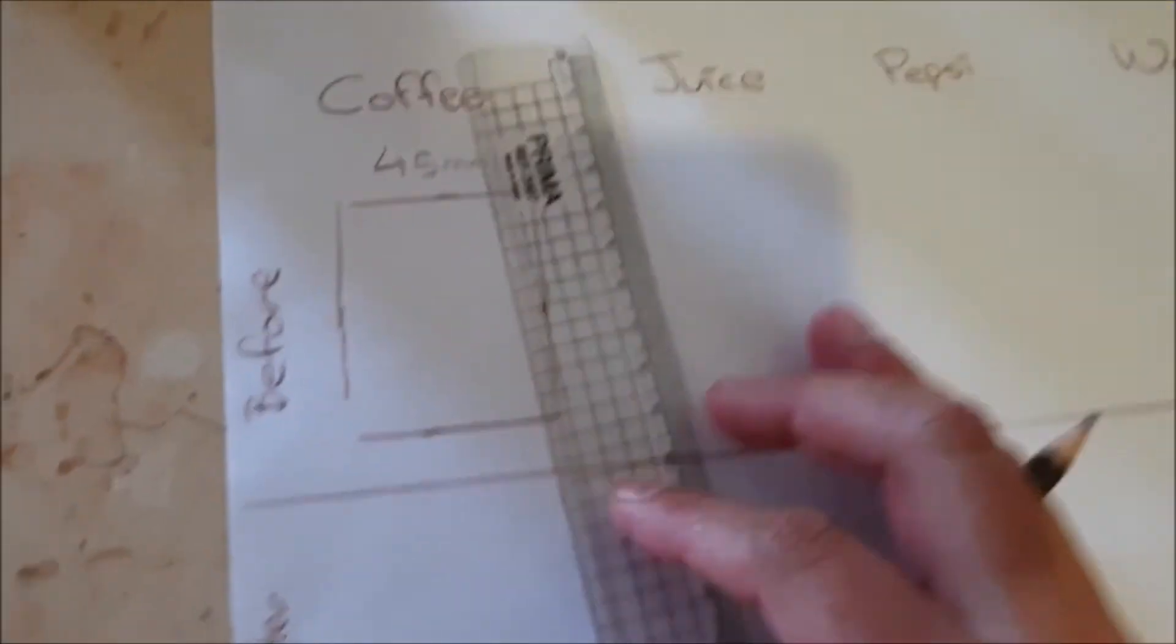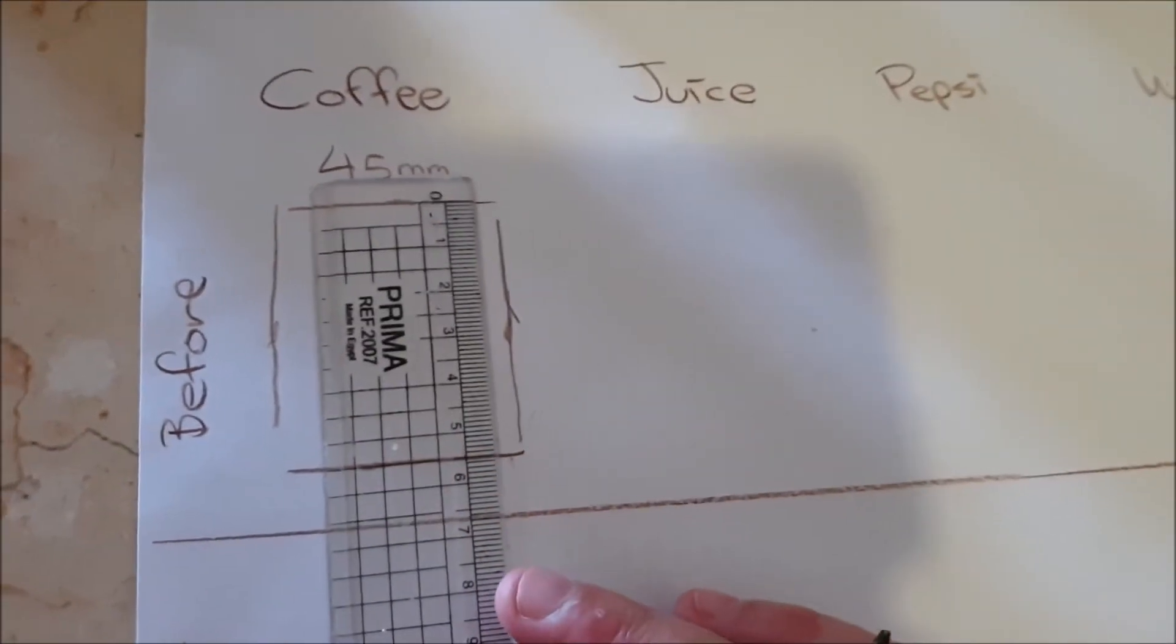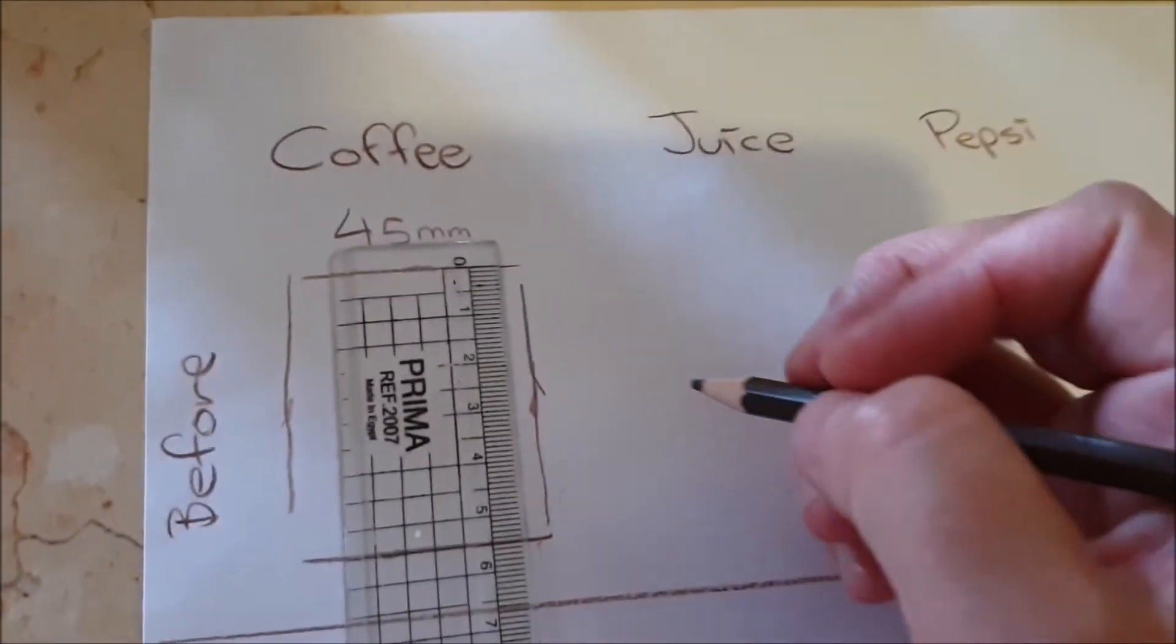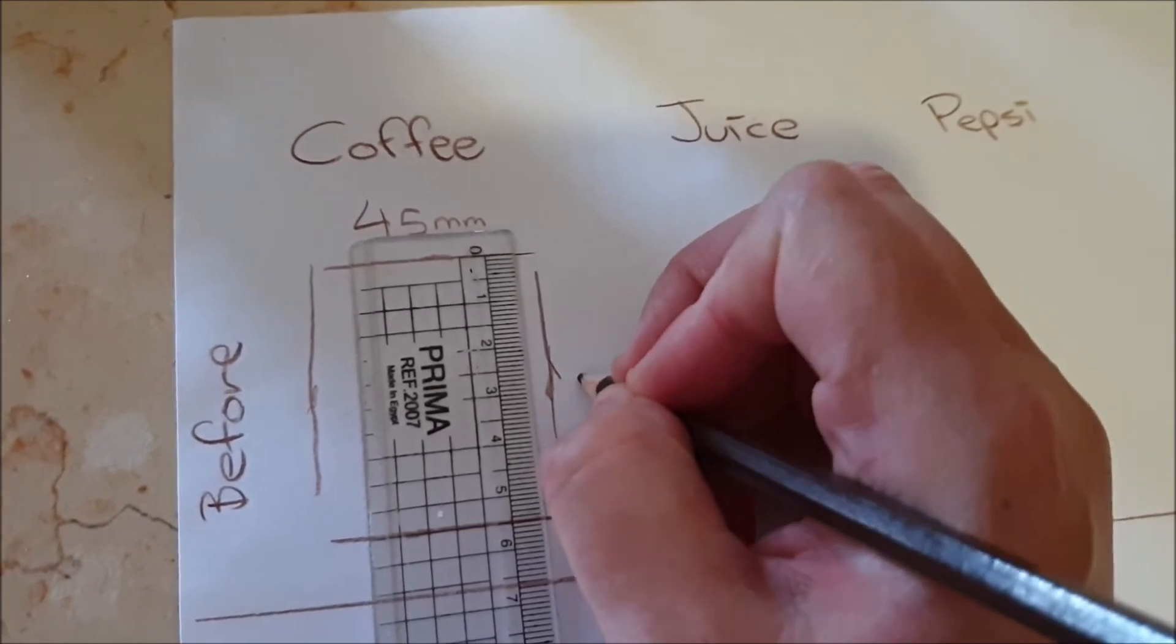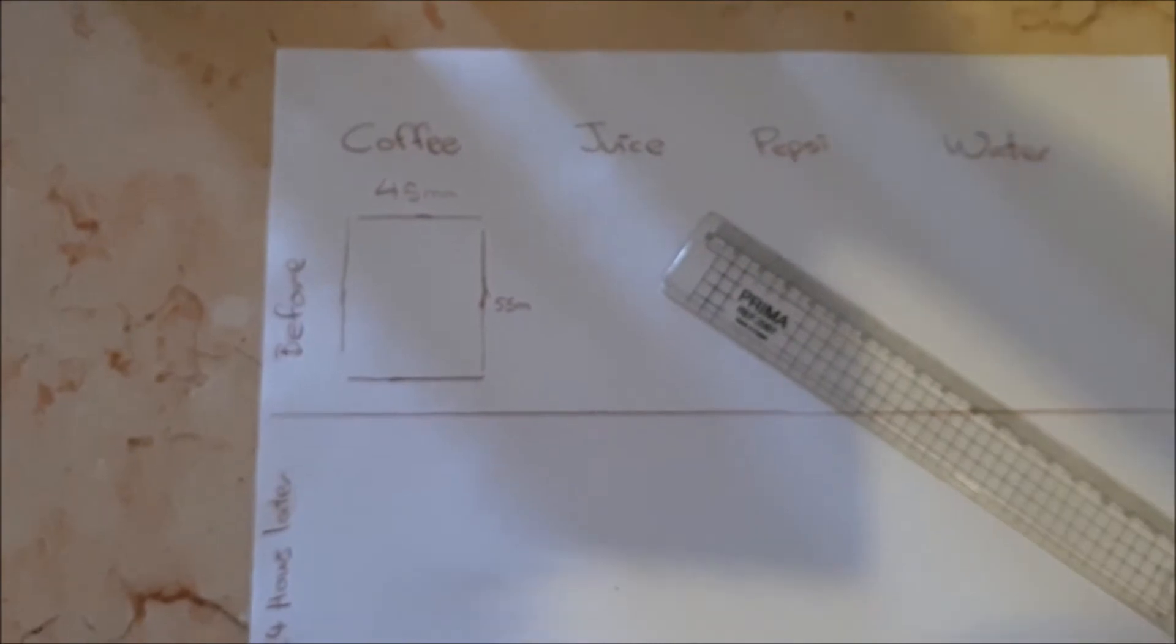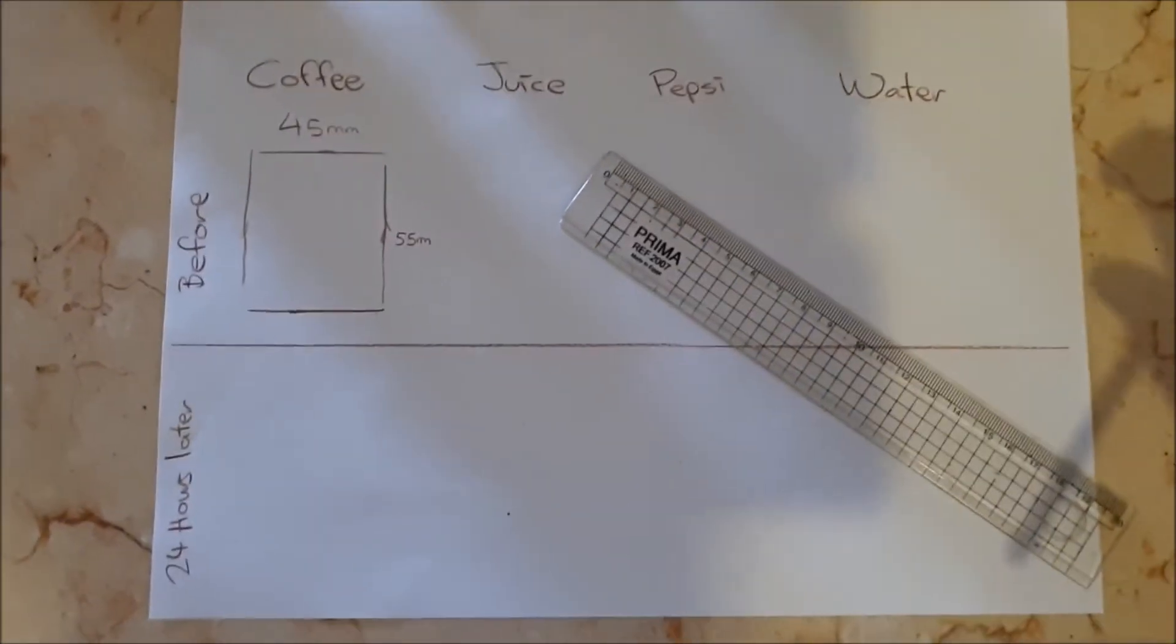And how tall is my egg? My egg is 55 millimeters. So this is my egg before the experiment, before it's gone in.